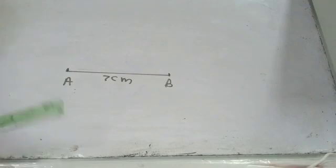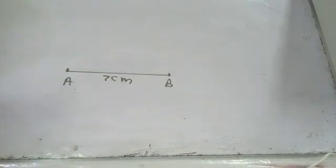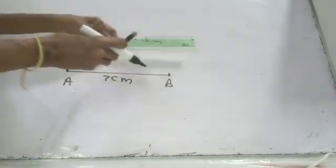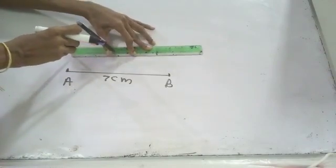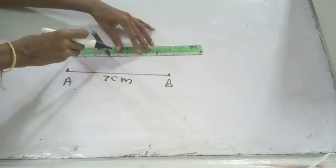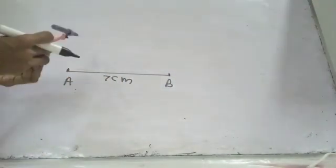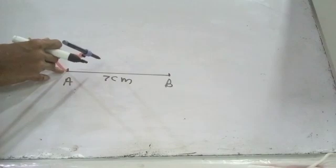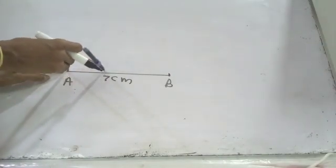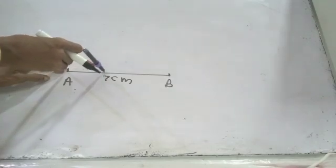Mark a point P on AB such that AP equals 3 cm. We take 3 cm to the compass. Place the point 0 and place the pencil point on 3 cm. Now, we take the 3 cm to the compass and taking the point A as the center, draw a small arc. Draw a small arc and name the point.